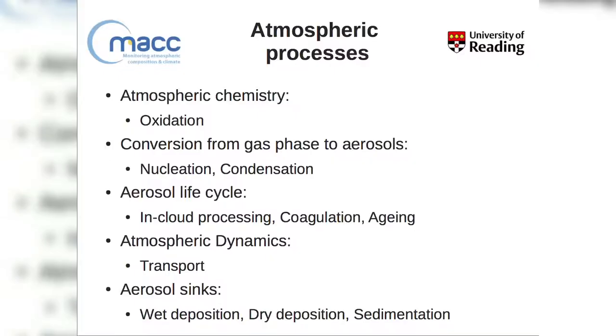Once aerosols are emitted, we enter the aerosol life cycle. This includes atmospheric chemistry — the oxidation of precursors — then gas-to-aerosol conversion through nucleation or condensation. Within the aerosol phase, further transformation occurs: cloud processing, coagulation, and aging. Aerosols are transported along atmospheric dynamics, and finally deposited — the sinks that balance emissions. There are several ways to remove aerosols from the atmosphere.